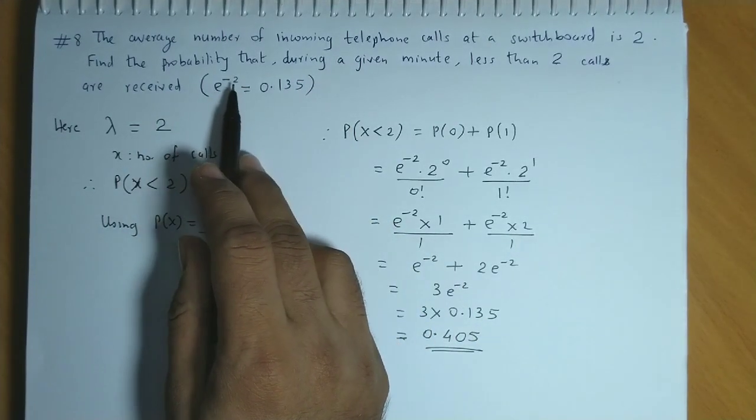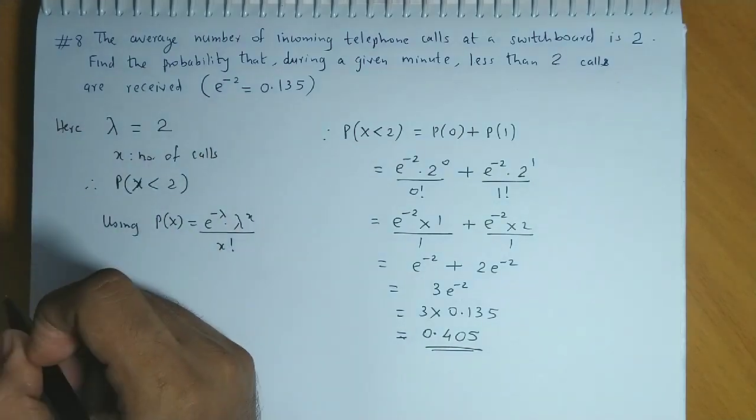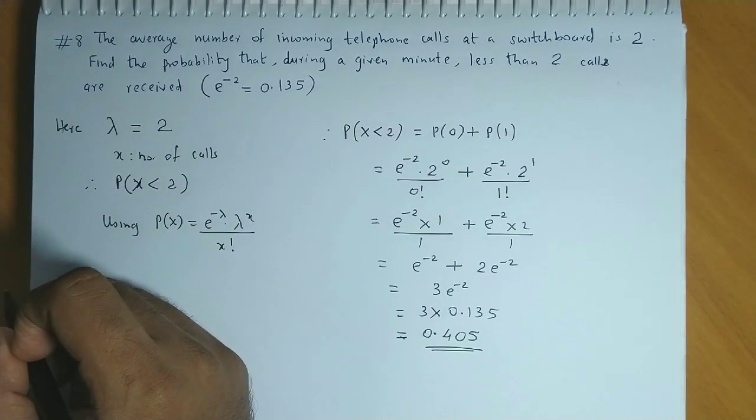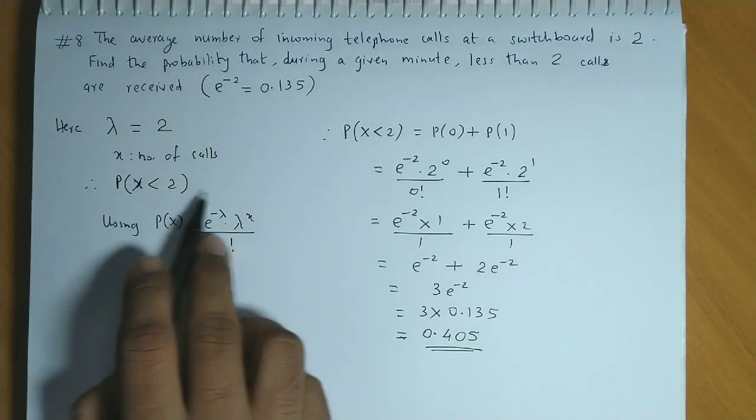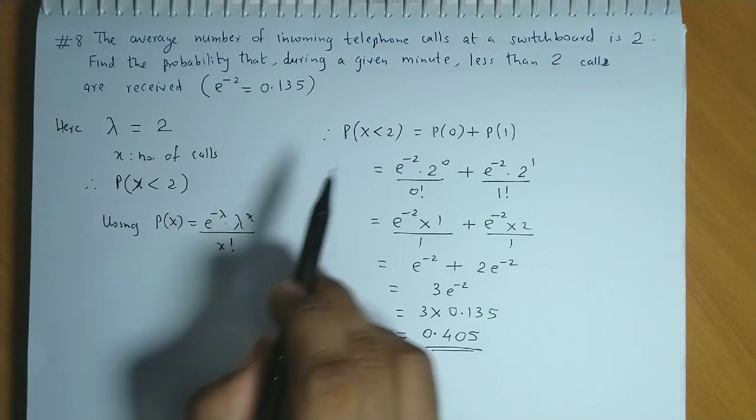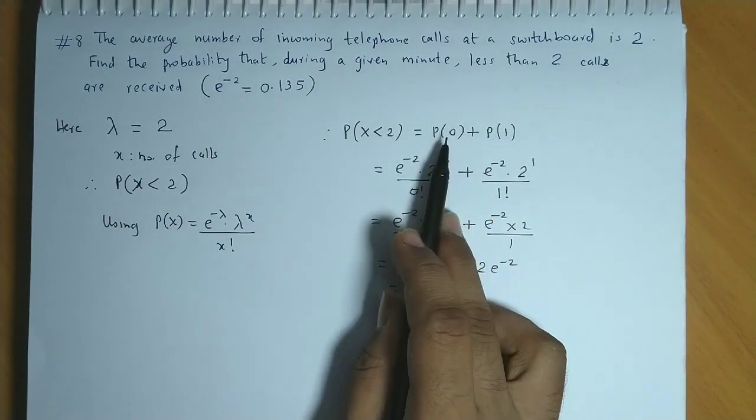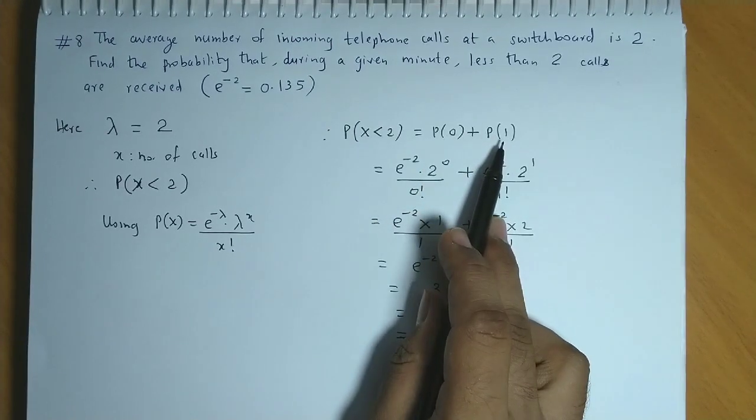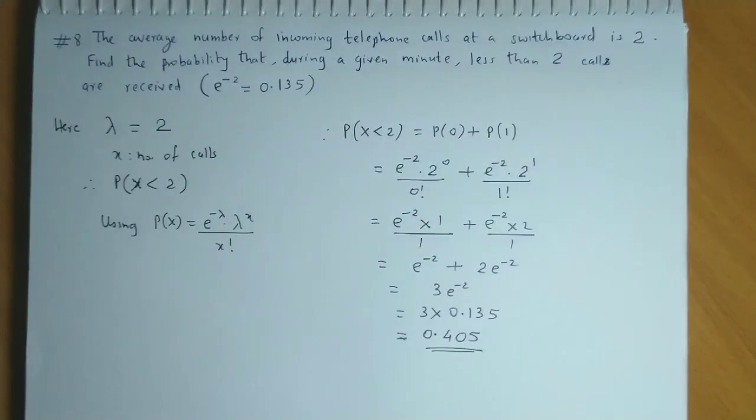Also here the value of e raised to minus 2 is given. So from here also we get a hint that we have to apply Poisson distribution. And we have to find probability at x less than 2. Apply the formula for P of x. Now less than 2, the values are 0 and 1. So we have to find probability of 0 and probability of 1. The final value is 0.405.